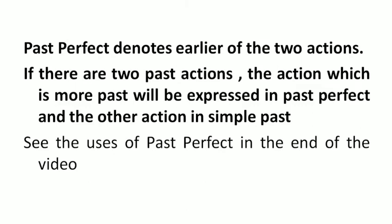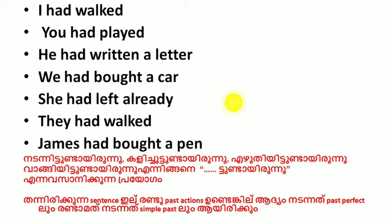Past perfect denotes the earlier of two actions. If there are two past actions, the action which is more past will be expressed in past perfect, and the other action will be in simple past tense. The first action that happened is expressed in past perfect, and the second action is expressed in simple past.